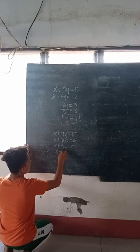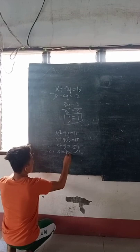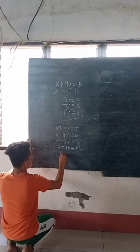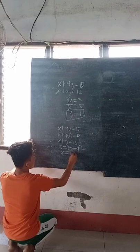We transfer the 9 to the right side, so x is equal to 15 minus 9. Therefore, x is equal to 6. Our x is 6.